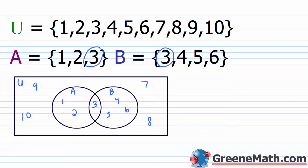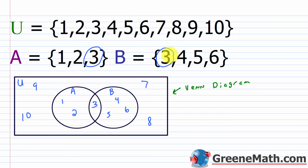So this is our first Venn diagram. It's a visual way to represent the relationship between the sets. Looking at it, I can immediately tell that the universal set is 1 through 10, set A is 1, 2, and 3, set B is 3, 4, 5, and 6, and that A and B have a common element of 3. That's key information I can pull right away from a picture versus trying to read roster notation.